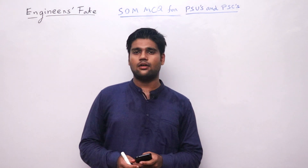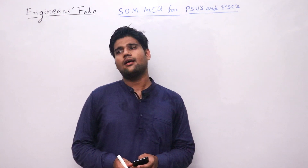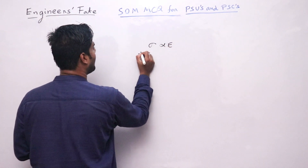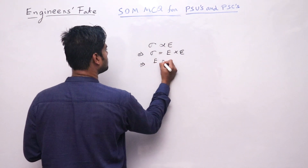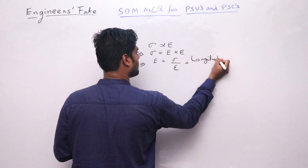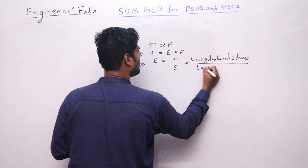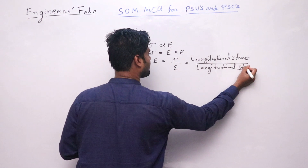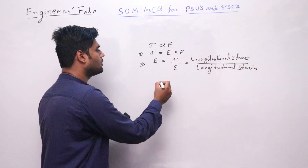While explaining the stress-strain curve, we derived that up to the proportional limit, Hooke's law is valid — stress is directly proportional to strain, and stress equals Young's modulus into strain. Young's modulus is stress divided by strain, that is longitudinal stress divided by longitudinal strain. So Young's modulus is the ratio of longitudinal stress to longitudinal strain — option C.